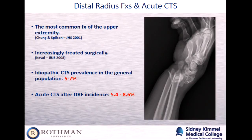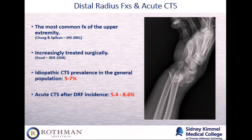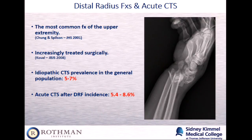Just one slide on distal radius fractures: it's very common — the most common fracture of the upper extremity. It's increasingly treated surgically; the threshold to treat these fractures surgically has decreased significantly over the past many years. When it comes to carpal tunnel syndrome, that's also very common — the most common peripheral neuropathy of the upper extremity, actually of the body. The prevalence in the general population is 5% to 7%, so it's very common. We need to make a distinction of what type of carpal tunnel syndrome we're dealing with.